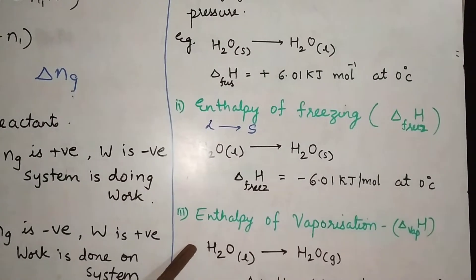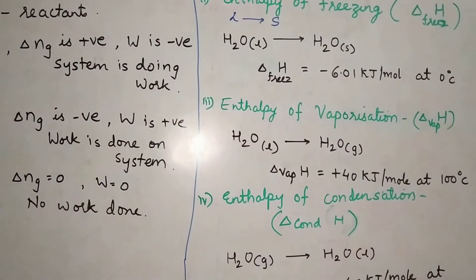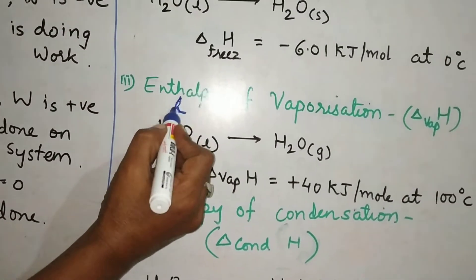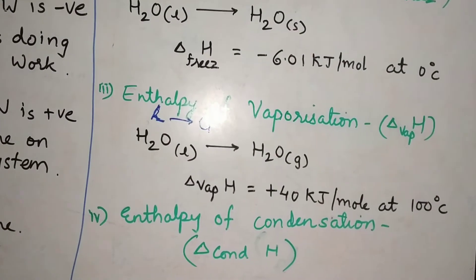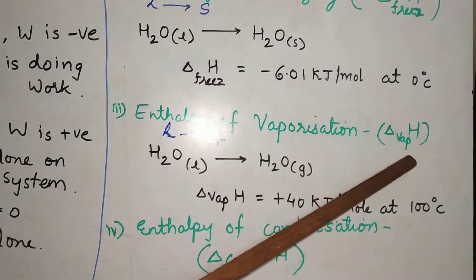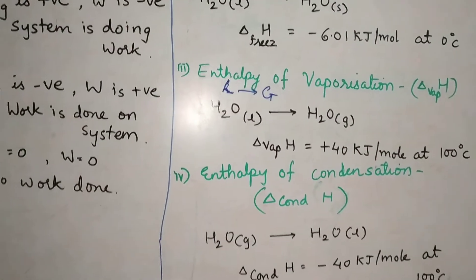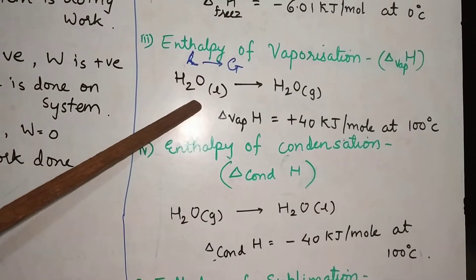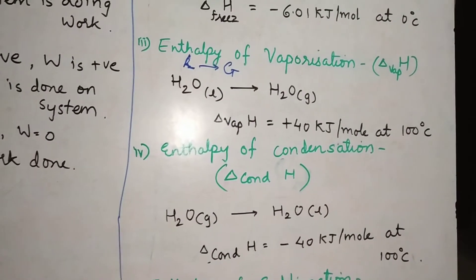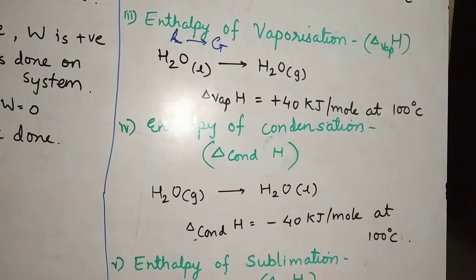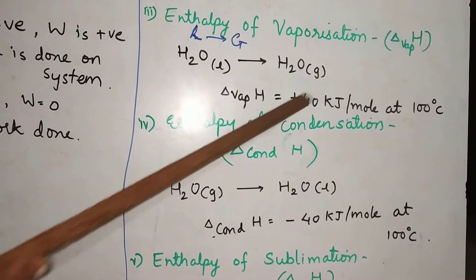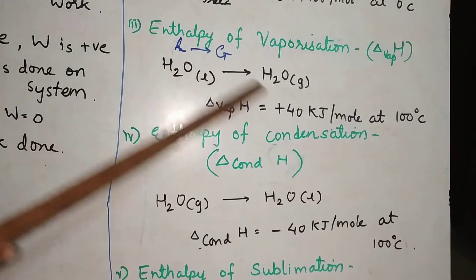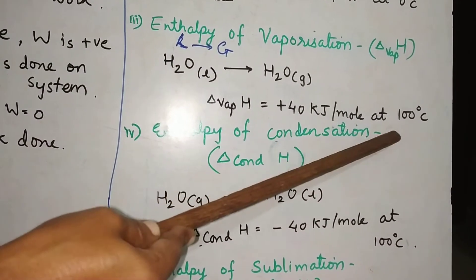The next definition is enthalpy of vaporization, delta H_vap. Vaporization is when a liquid is converted to a gas. It is defined as the enthalpy change taking place when one mole of a liquid gets converted to gas without change in temperature and at constant pressure. For water changing from liquid to gas, the value is plus 40 kilojoules per mole at that particular temperature — it is again an endothermic process, as heat is required.